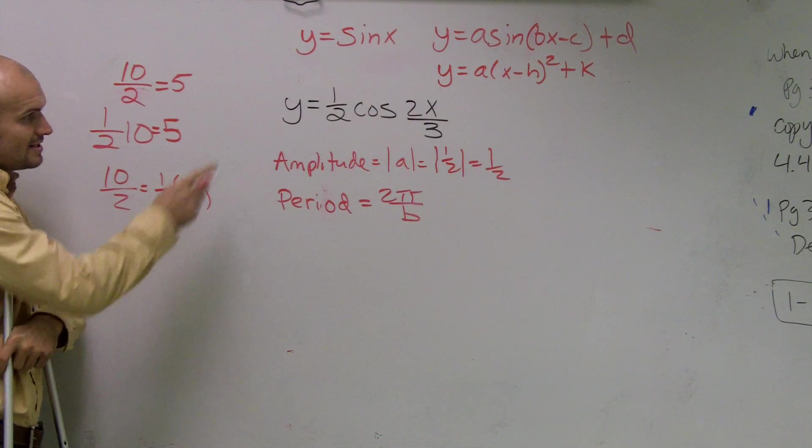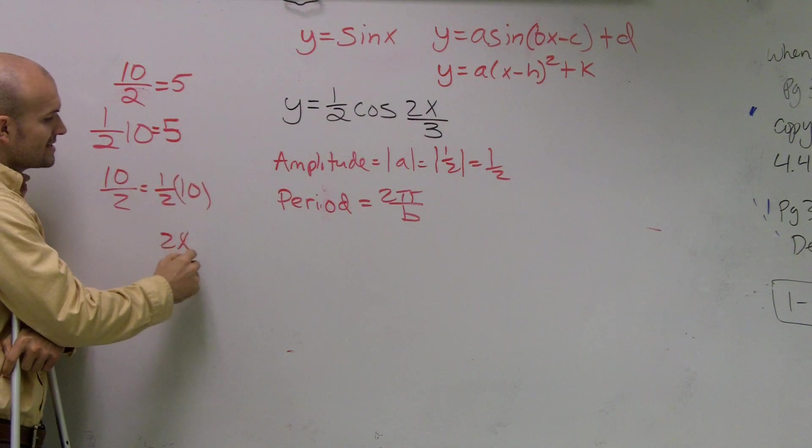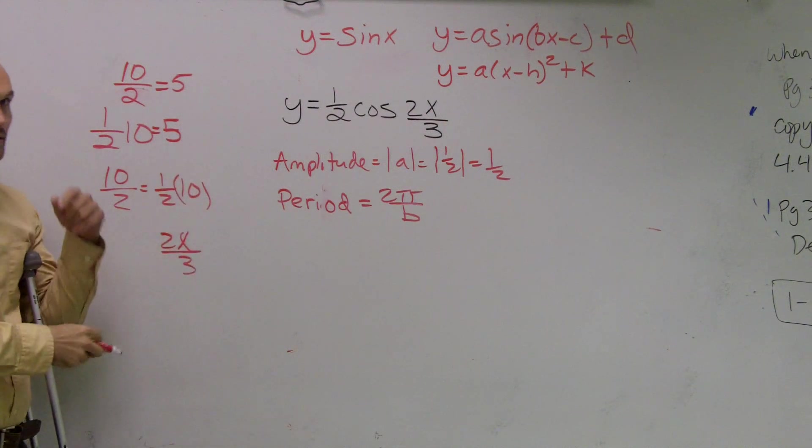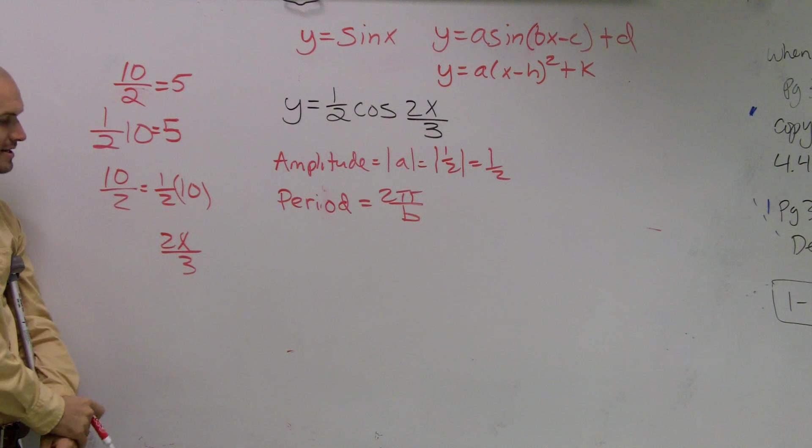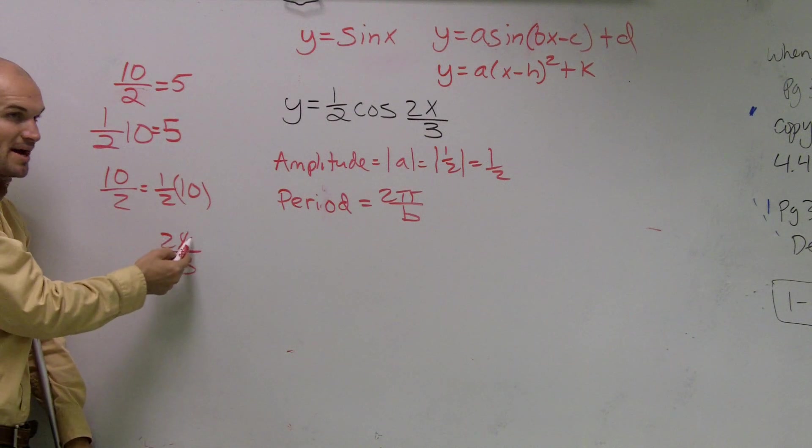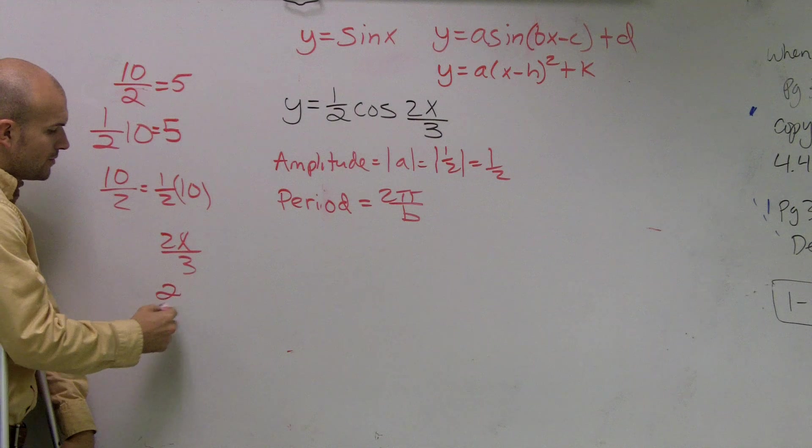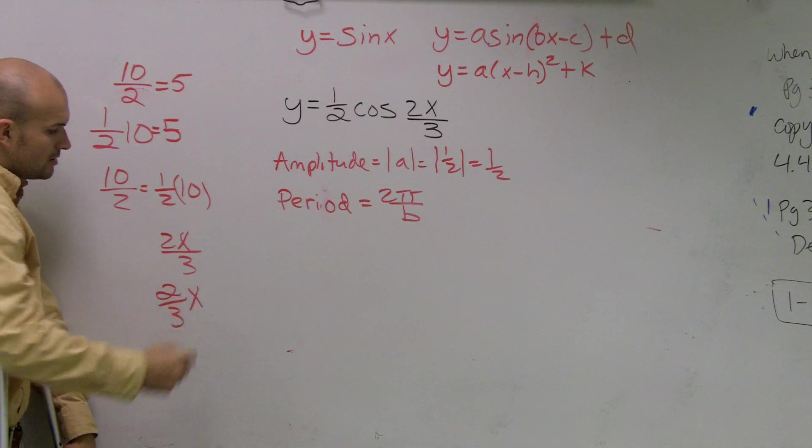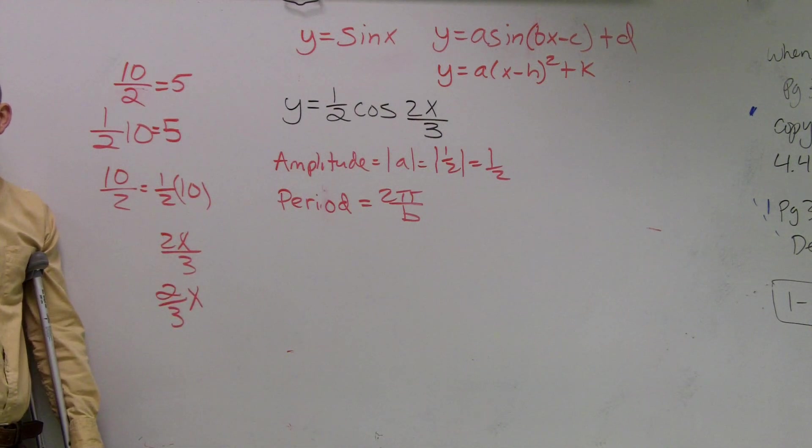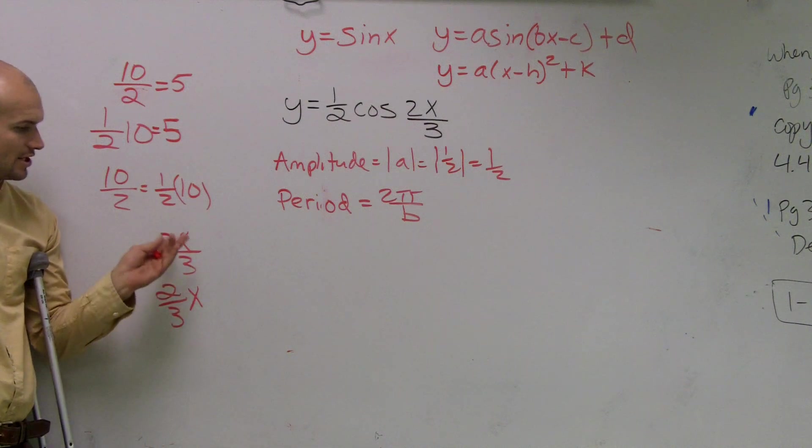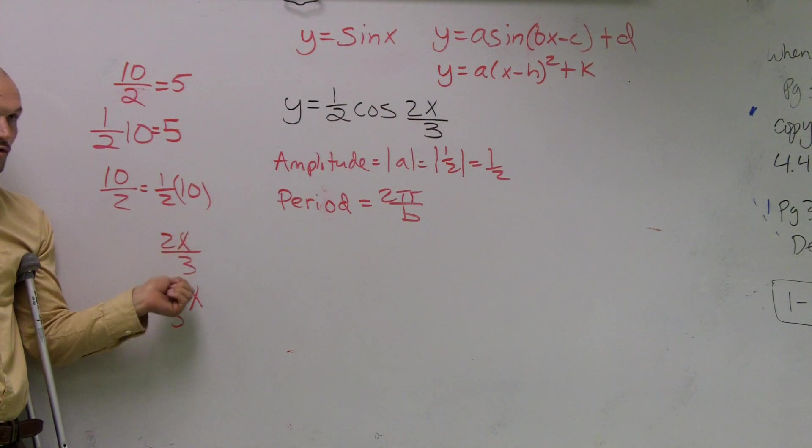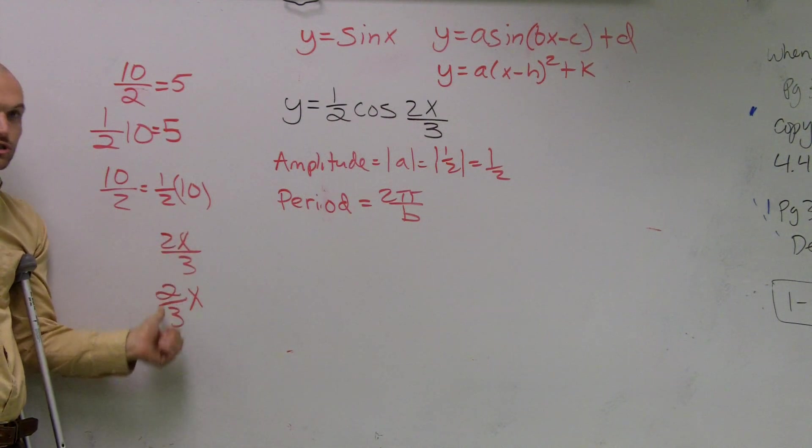So then, what I'm trying to get to this is this point is 2x divided by 3. I can rewrite this, Miranda, as instead of saying multiply by 2 and then divide by 3, you can write this as 2/3 x. So you guys need to understand that 2x over 3 is the same thing as 2/3 x.